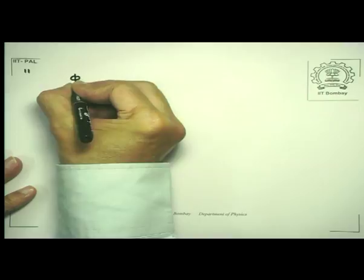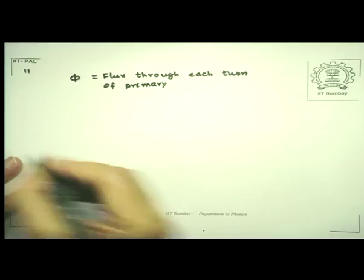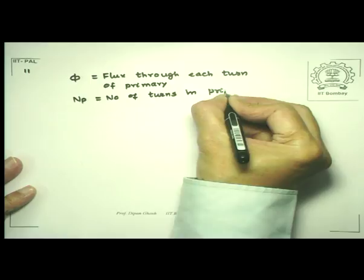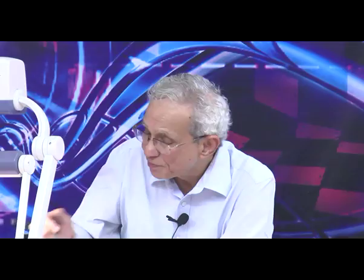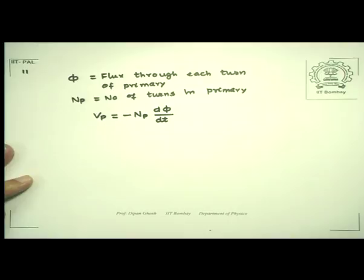Now suppose φ is the flux through each turn of the primary circuit, and NP is the number of turns in the primary circuit. Since I have assumed that the resistance in the primary circuit is equal to 0 — which is an unphysical assumption — the voltage in the primary circuit must be exactly balanced by the back EMF, because otherwise the current will become unphysically large. So VP is NP dφ/dt.